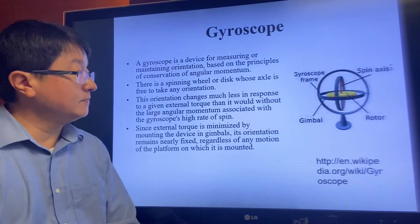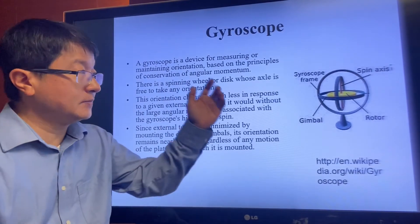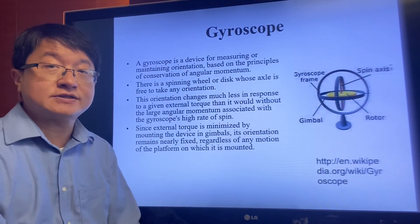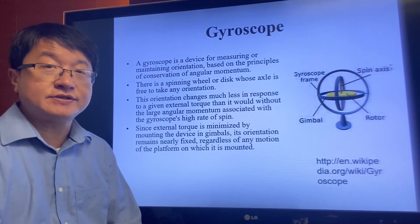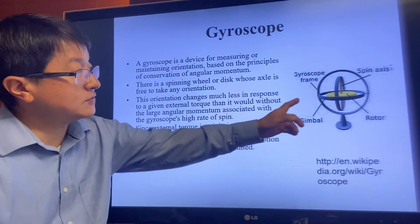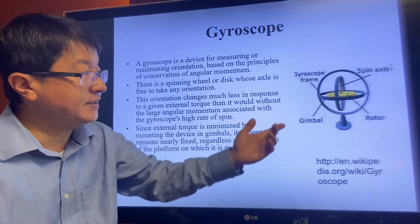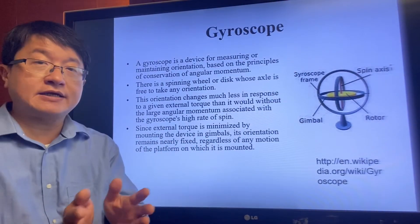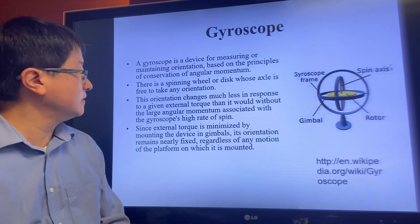The gyroscope can provide much more information than just X, Y, Z orientations. It also tells us the spin, the angle, angular momentum and velocity, and so on.